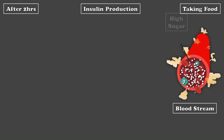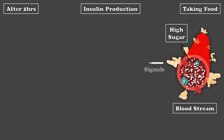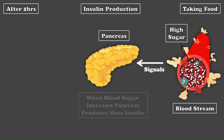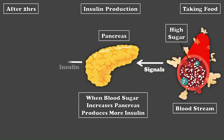Due to the high blood glucose, our brain sends a message to the pancreas, which allows the pancreas to produce insulin according to the amount of glucose in the blood, and as a result, the amount of glucose in the blood becomes normal.